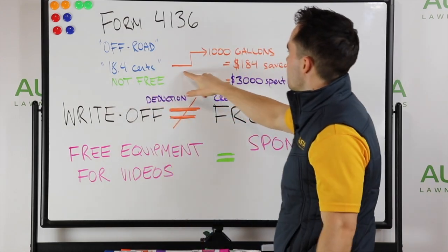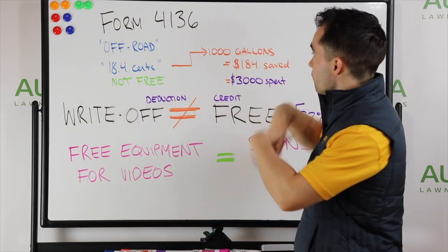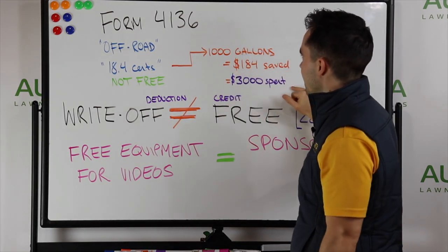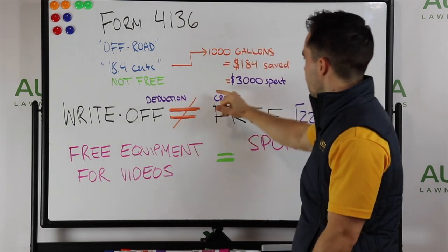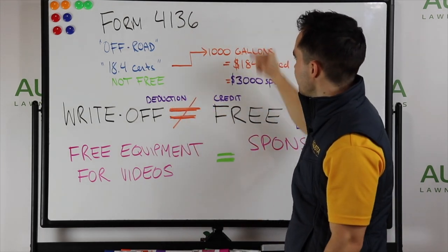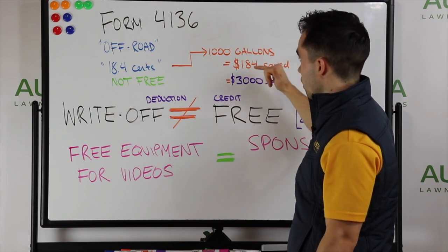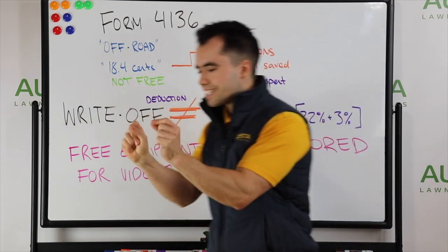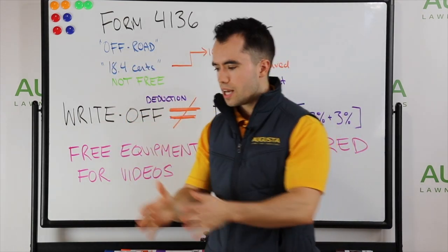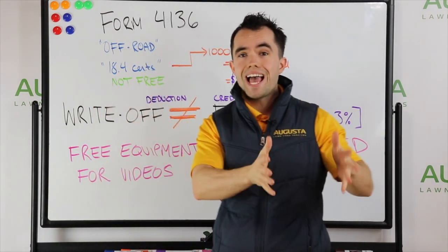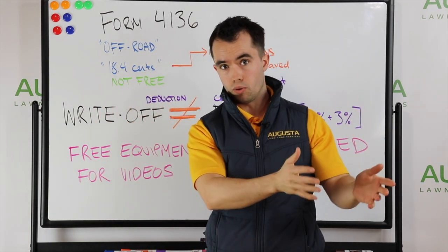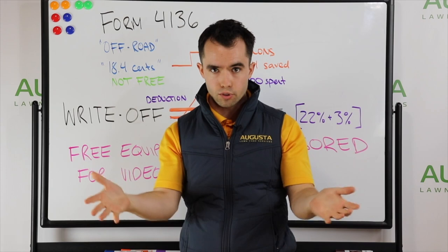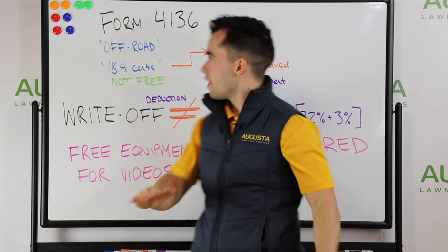By filling out Form 4136 and keeping track of the amount of fuel you use off-road, you're able to get this 18.4 cents as a tax credit. That means I need to use 1,000 gallons of fuel. I'm going to save $184 and I'm going to spend $3,000 to get it. So I'm spending $3,000 and I'm going to save $184. I'm saving maybe 6%.